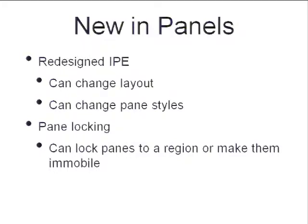One thing that iVillage needed for their content people was pane locking. One of the most important problems they were running into is they had content people that they needed to be able to control where their content was. They weren't editing the layout, although they might change it from one to another. But they needed to be able to say, 'these ads can't move' and 'these header elements have to stay in the header.' So we added locking to panes. If you have the lock permission, you can lock the pane and say it can't be moved at all, or it can only be moved in this set of regions, and you can select which regions. Then, to move it, it must be unlocked, and only people with the unlock permission can do that. It was a great thing for the content people, because it allowed them to not worry about things that were outside of their purview.